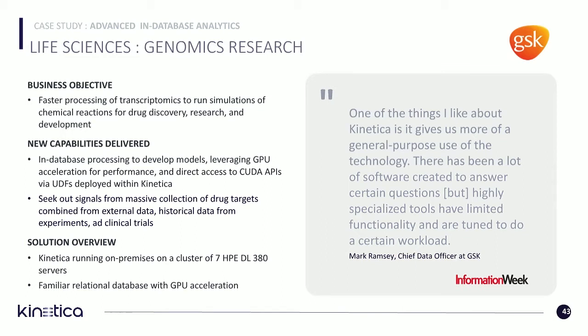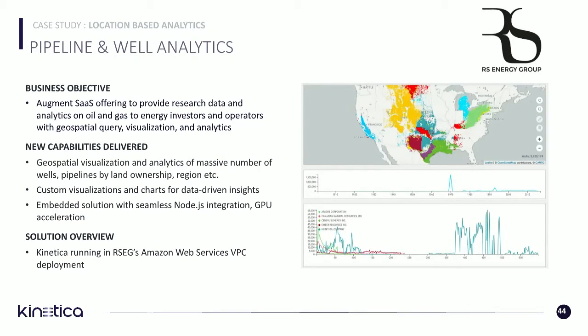This is running on a seven-node cluster on their premises. Next we come to geospatial analysis — each use case gets more and more complex and advanced. RS Energy Group focuses on oil and gas, and they provide their end customers with very rich analytics on oil and gas data, including pipelines and wells.